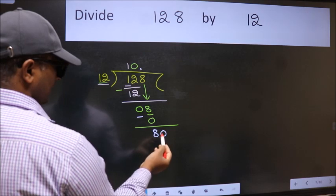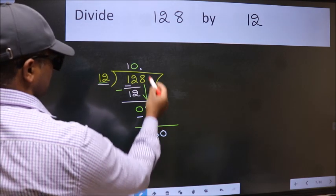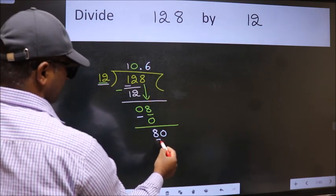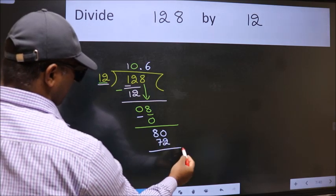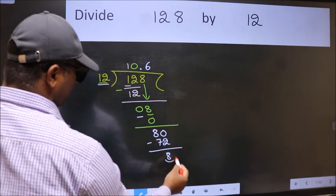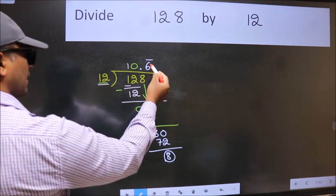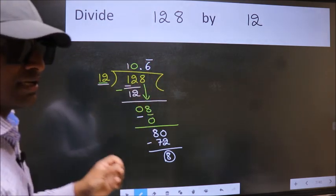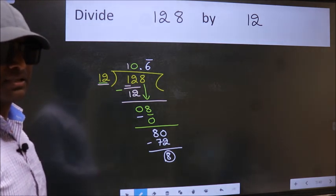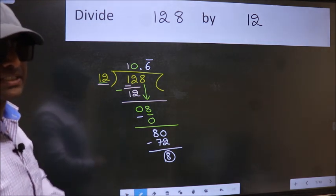So 80. A number close to 80 in 12 table is 12, 6, 72. Now we subtract. We got 8 again. That means we get bar on this number. Did you understand where the mistake happens? You should not do that mistake.